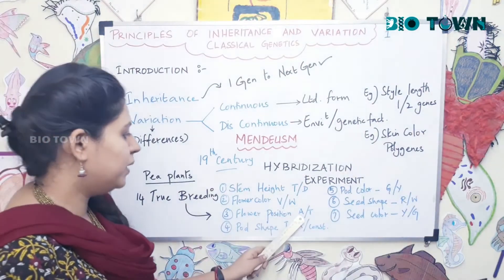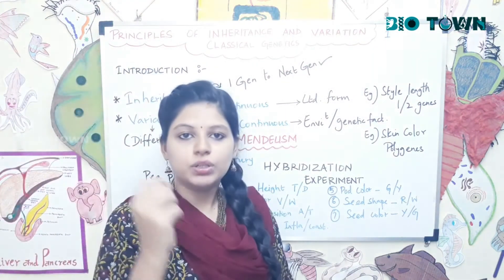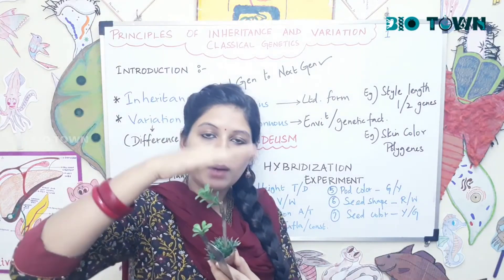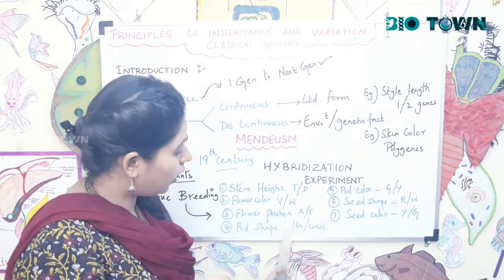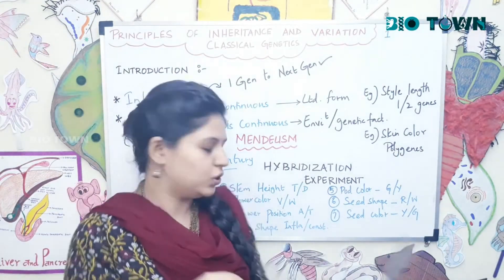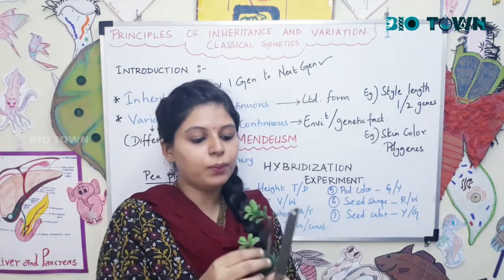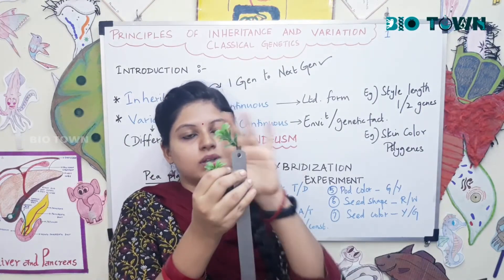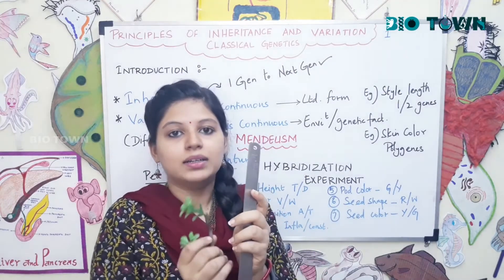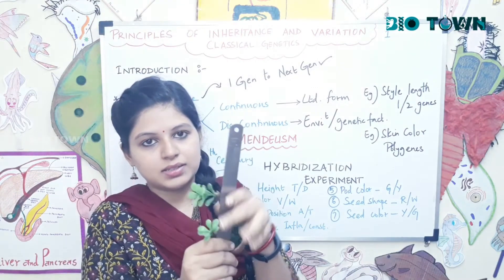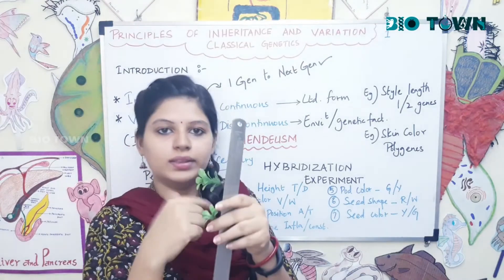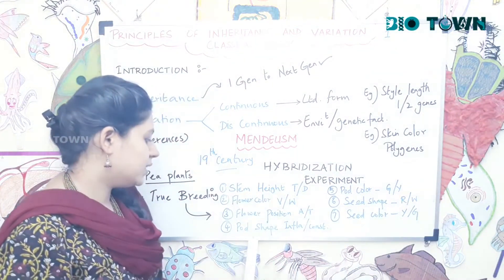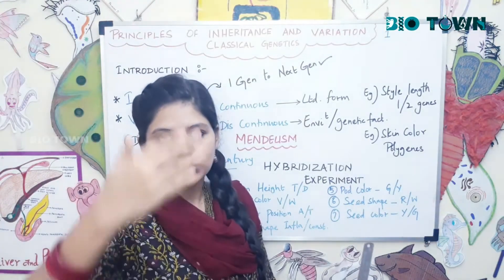The third contrasting character is flower position: axial versus terminal. Terminal position means the flower is present at the topmost part of the plant. Axial position means the flowers are placed not at the top but distributed throughout the surface of the plant. That is the difference between terminal and axial position.